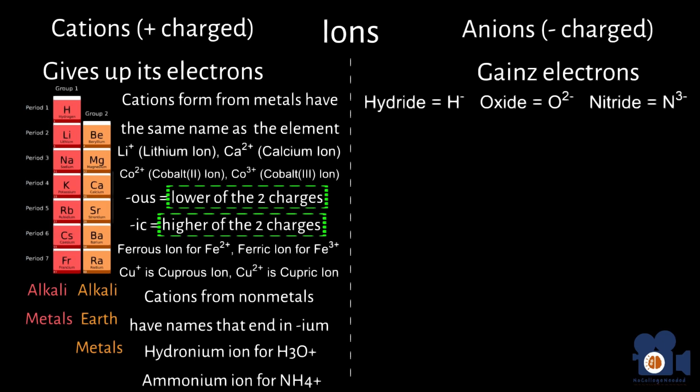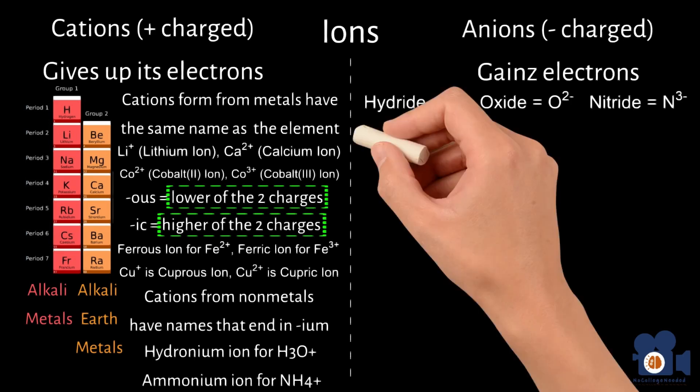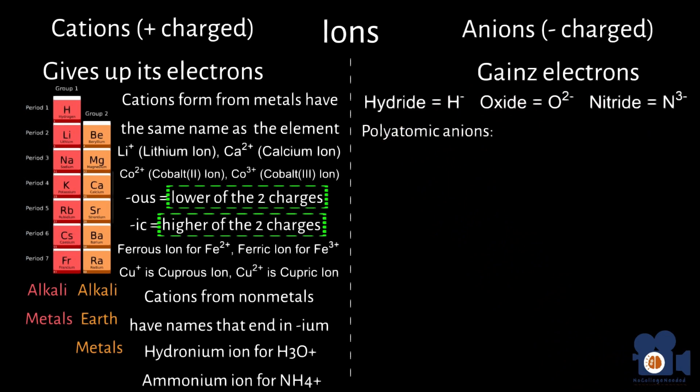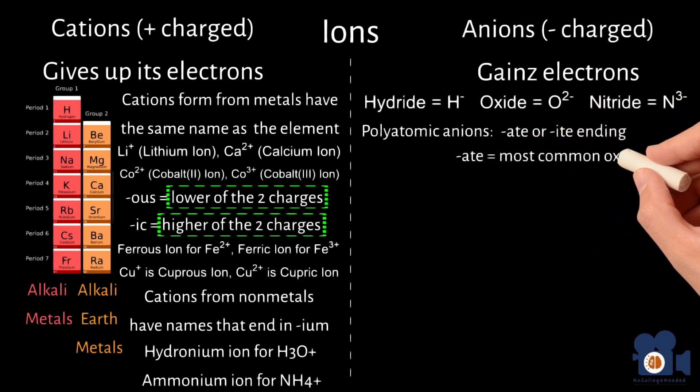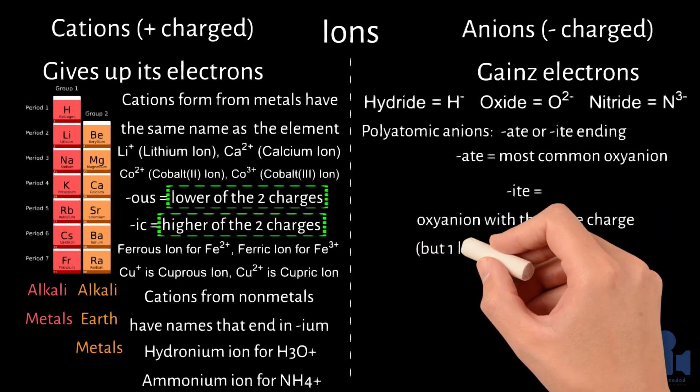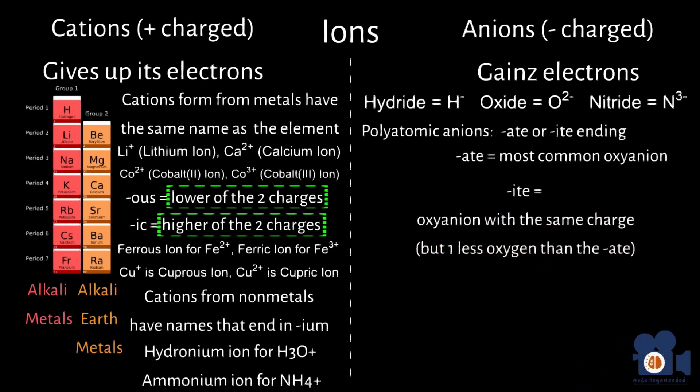Polyatomic ions are a little more confusing, mainly because their naming system was developed many years ago. The polyatomic anions that contain oxygen end in either ATE or ITE, with the ATE being used for the most common oxyanion, and ITE being used for the oxyanion with the same charge but one less oxygen than the ATE. An example of this is the nitrate ion of NO3-, and the nitrite ion of NO2-.